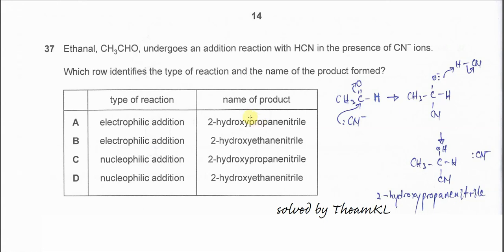Question 37. Ethanal undergoes an addition reaction with HCN in the presence of the cyanide ion. Which row identifies the type of reaction and the name of the product?